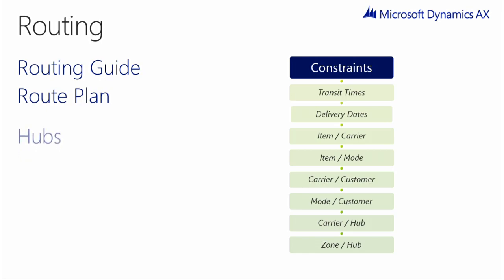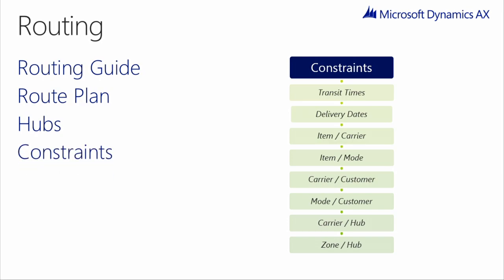If any hubs are to be used, they can be specified in the route plan. Additionally, if a certain item, carrier, or shipment needs to be withheld from a particular carrier or service, this can be set up in the constraints form. That covers our routing overview.